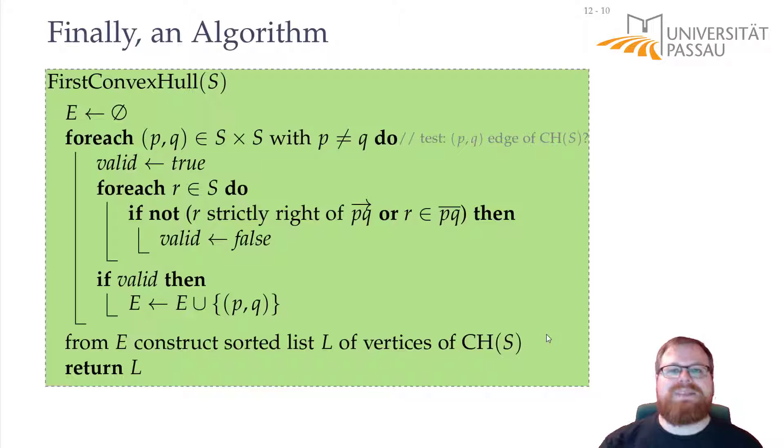So the correctness of this algorithm follows immediately from the observation we had on the previous page. But there are a few details in this pseudo-code that we should have a look at. The first thing is, how do we test this? How do we test if r is strictly to the right of this directed segment? And how do we do this fast? Do you have an idea?